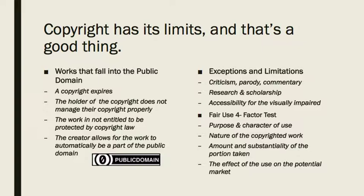A work can enter the public domain in four ways. First, the copyright expires — the law states that a copyright can't last forever. Second, the holder of the copyright does not renew their copyright or otherwise follow the rules to protect their copyright. Third, the work is not entitled to be protected by copyright law — for example, in the U.S., that is any work created by a federal government employee. Fourth, the creator allows for the work to automatically be part of the public domain. Creative Commons has a CC0 button that assists authors in making their work available to all without a copyright.